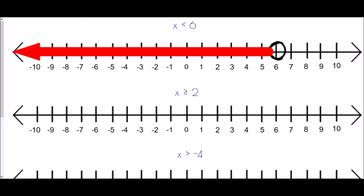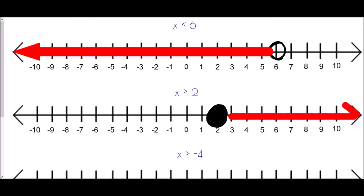For x greater than or equal to two, we draw a circle at the number two. To distinguish between inequalities with and without the equal sign: if we can include that value, we color the circle in. So for greater than or equal to, we color in the circle, then draw the arrow to the right.